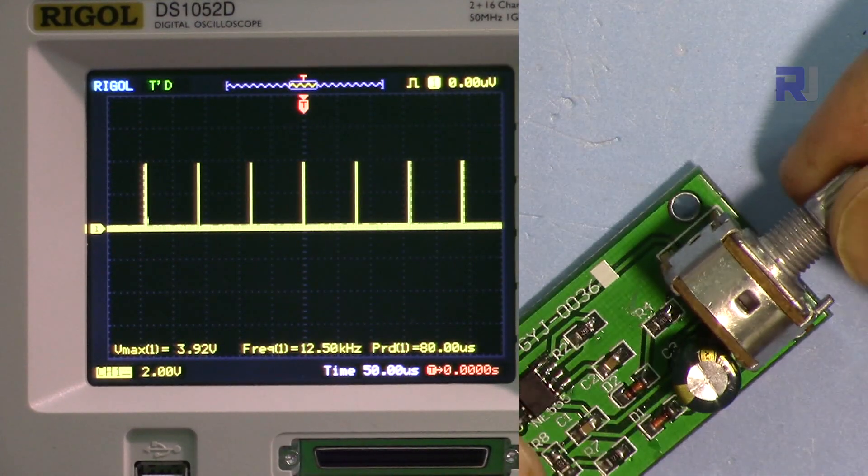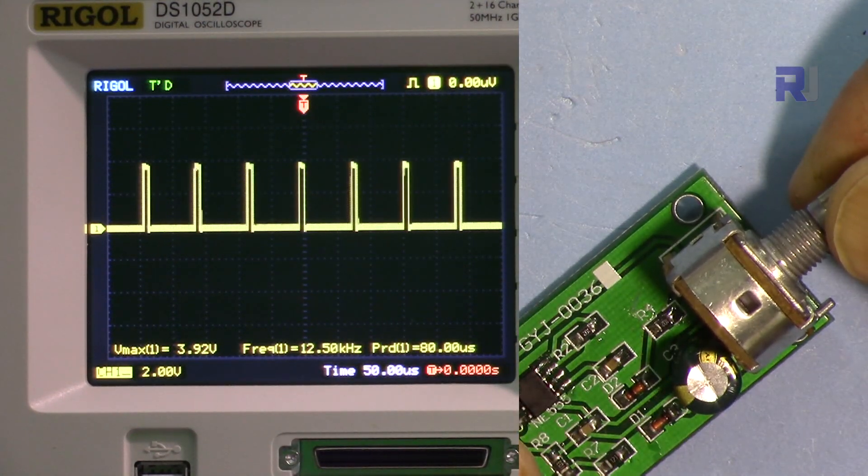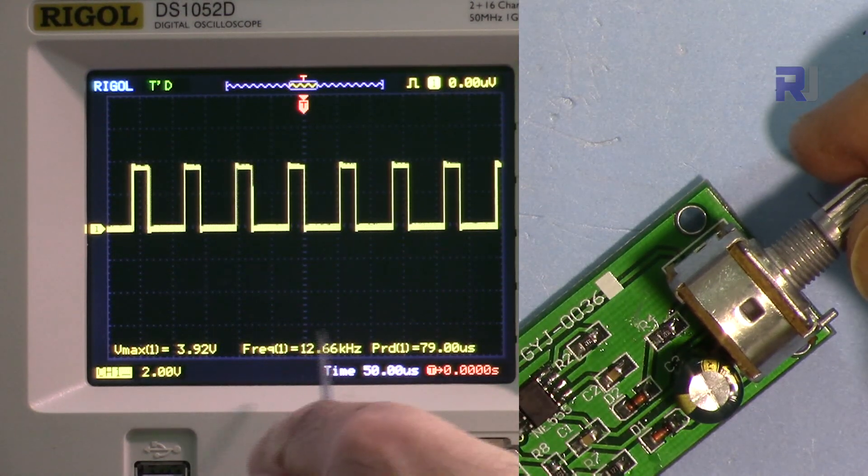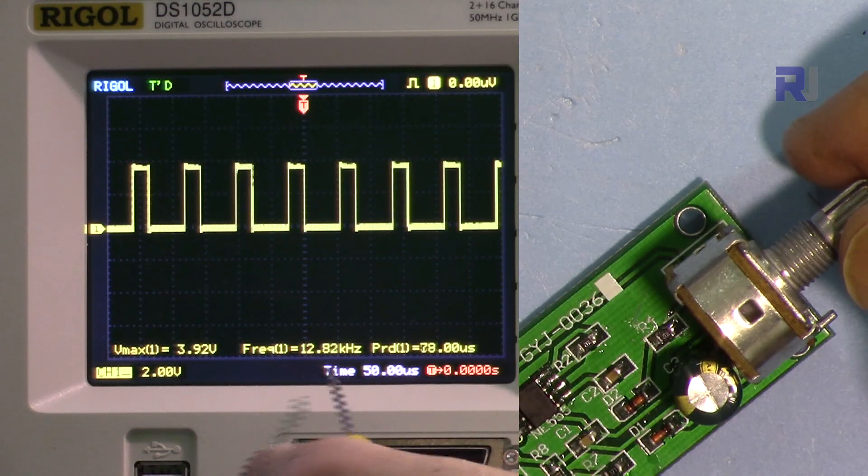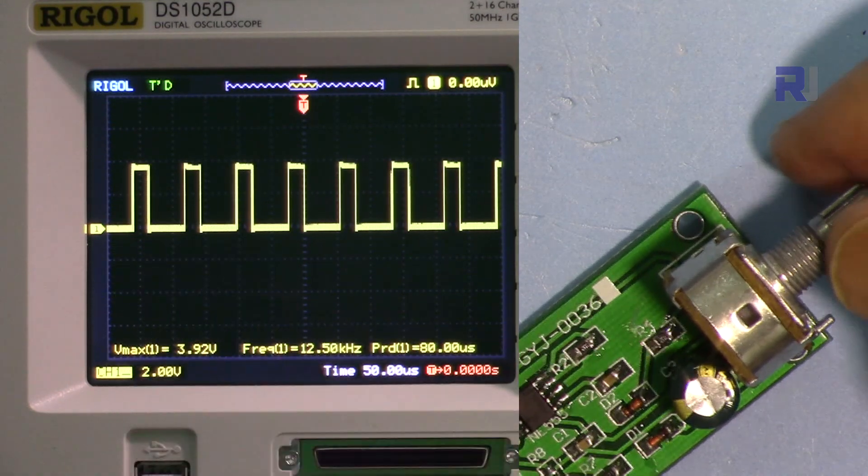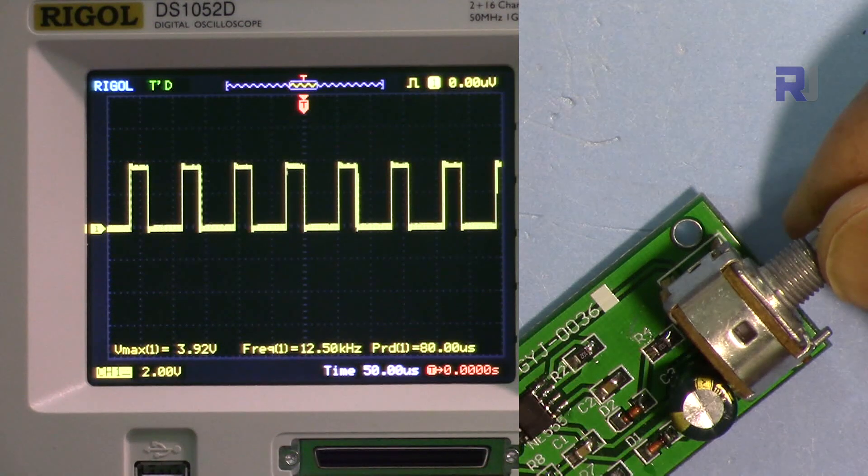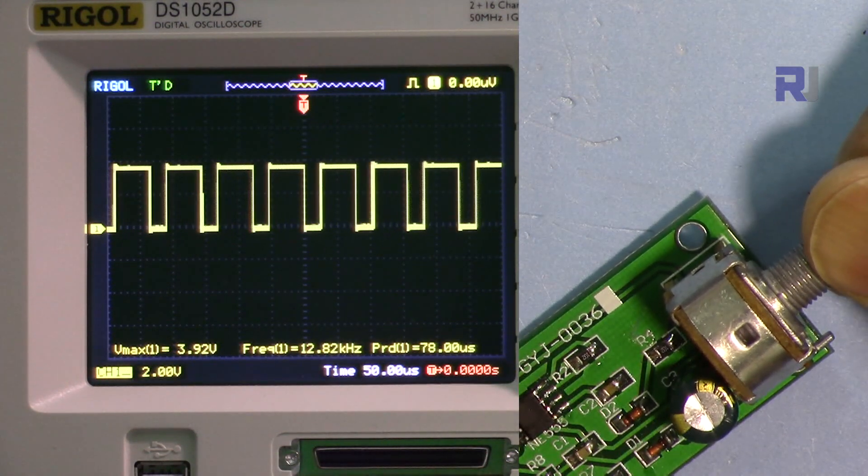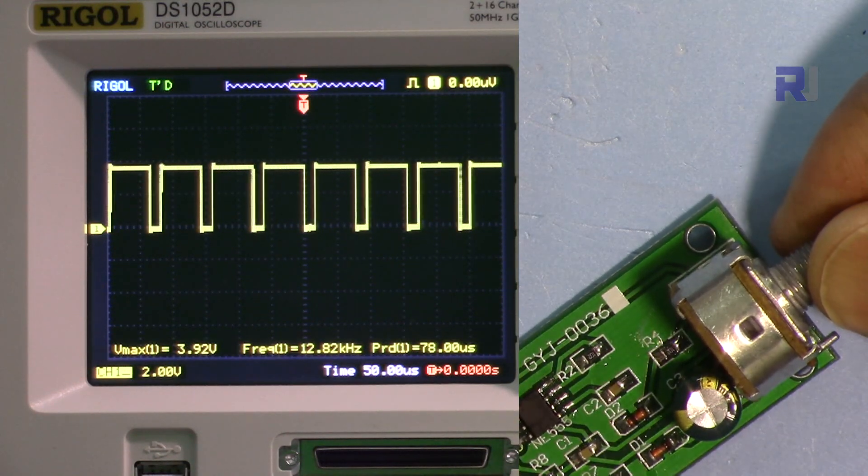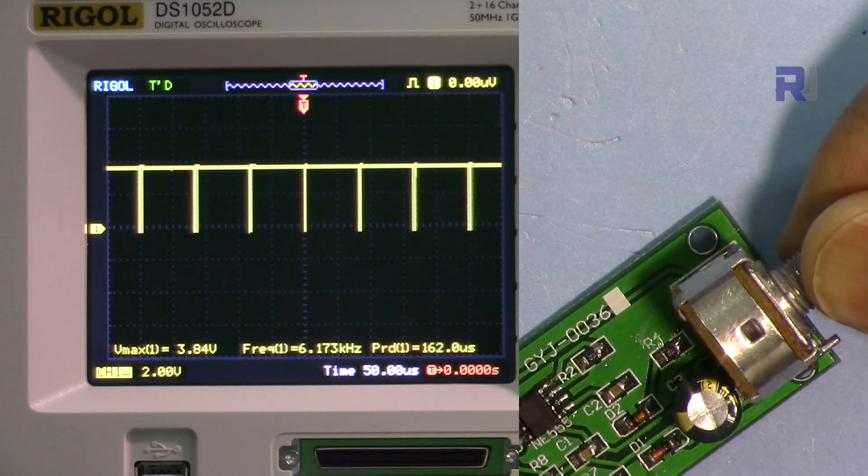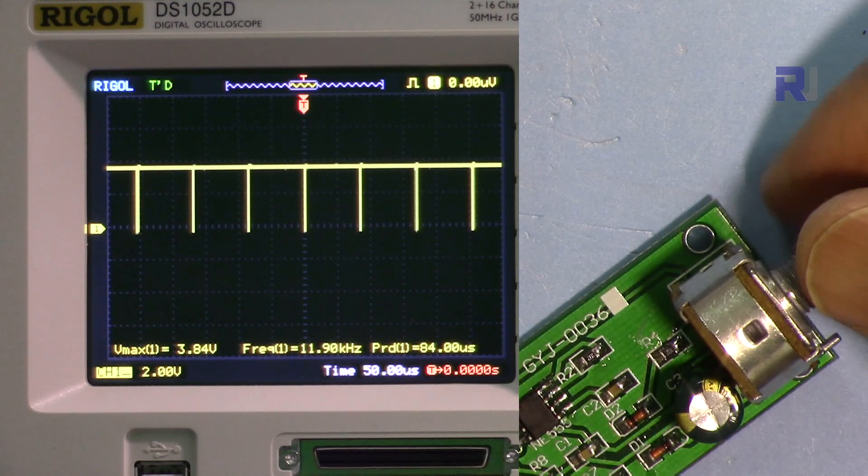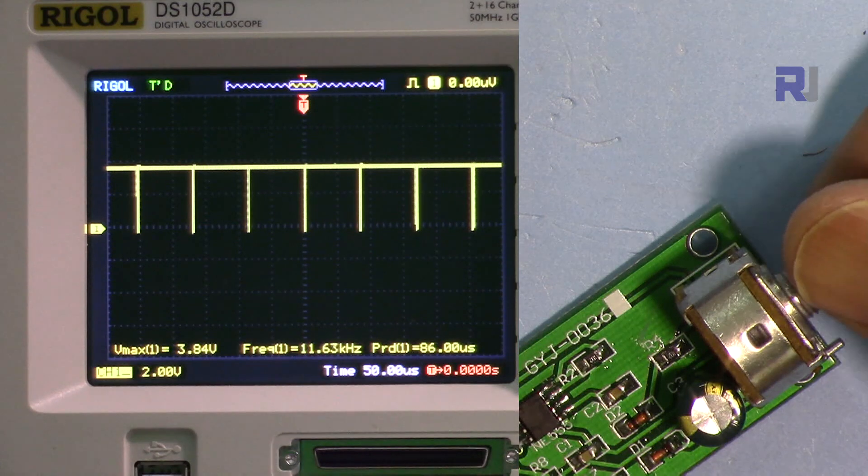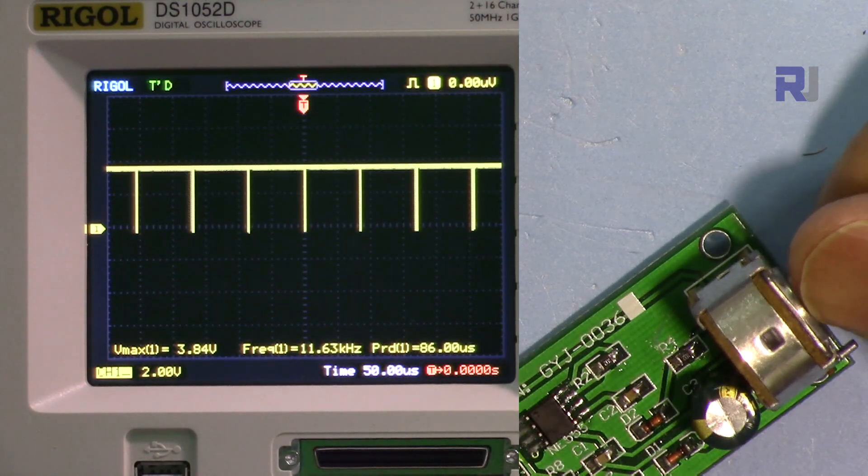And now let me just increase the duty cycle. As you can see, the duty cycle increases. Pay attention to the frequency. The frequency is around 12 kilohertz, still stable. The voltage is also important that we have to look at—3.92. So the frequency is still a little fluctuation but stable. Now it's at maximum duty cycle. Now it's at maximum duty cycle, but the frequency has drifted a little but still within the two percent of the value.